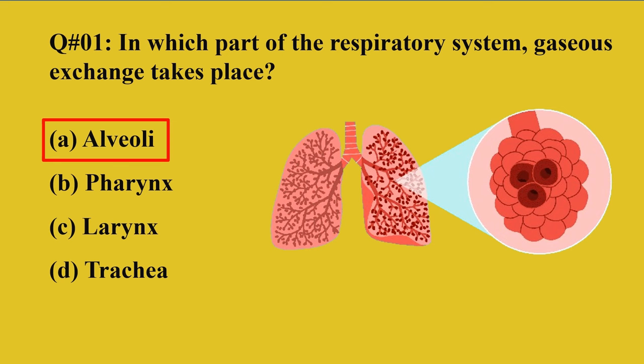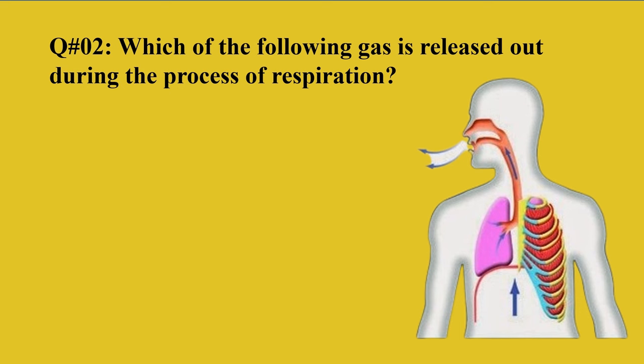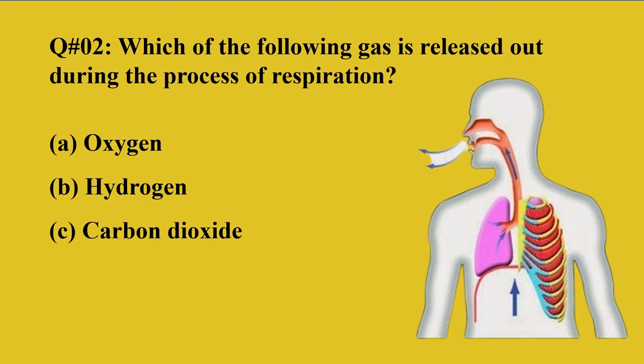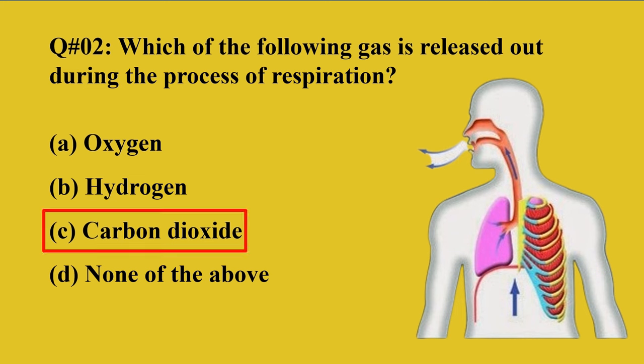Question number 2: Which of the following is released out during the process of respiration? Option A: oxygen, B: hydrogen, C: carbon dioxide, D: none of the above. The right option is C, carbon dioxide. During the process of respiration, human beings inhale oxygen and exhale out carbon dioxide.